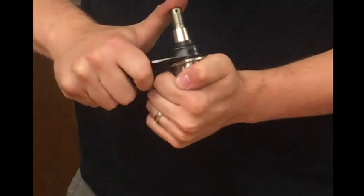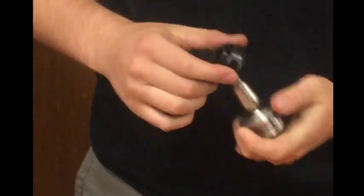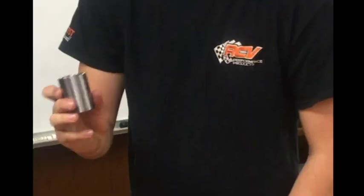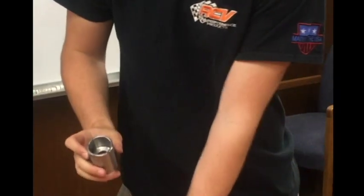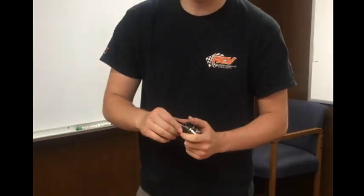Take your other ball joint and do the same. Give it a pop, just like that. You got your ball joint boots off. Now we do give a tool with the RCV ball joints. Use this tool to reinsert the ball joint boots that you took off onto the RCV ball joints.